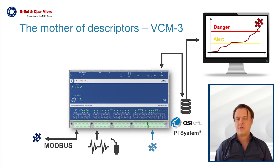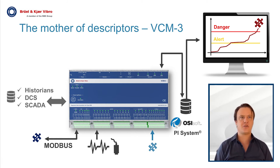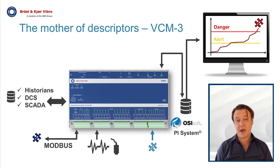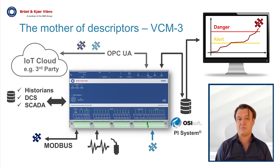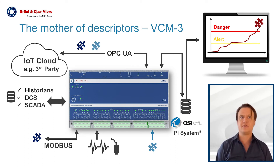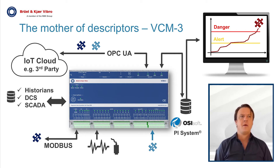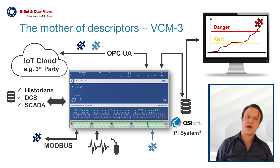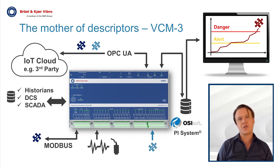other plant systems such as historians, DCS, or even third-party IoT suppliers — like Microsoft Azure or Amazon Web Services — that can easily process all that data. The trend of these descriptors over time allows you to see how the condition of your component degrades.